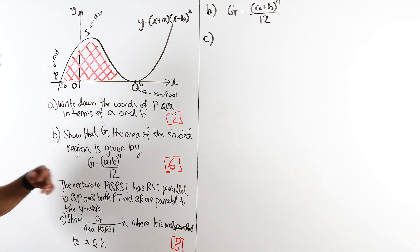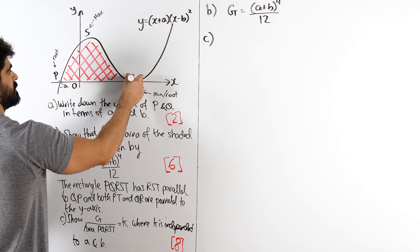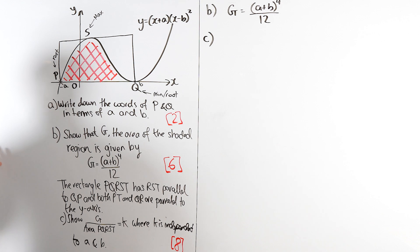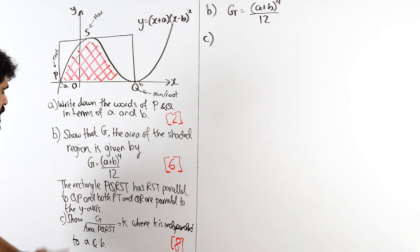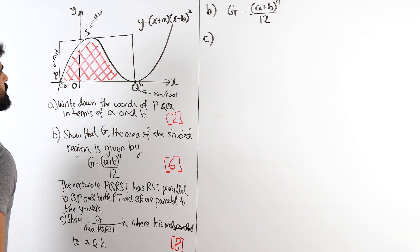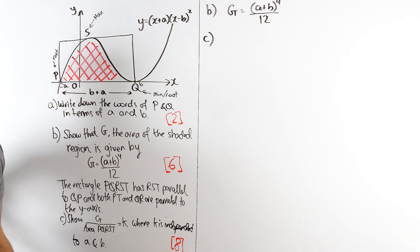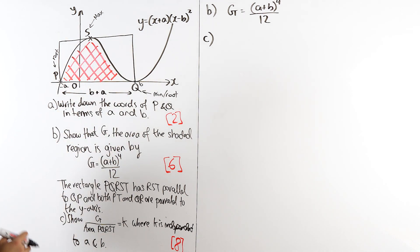So I'm going to write down that result. Then we shall move on to part c, which is eight marks, which I'm not looking forward to. So we have part b, G is a plus b to the four over 12. The rectangle PQRST has RST parallel to QP, and PT and QR parallel to the y-axis. So the rectangle is like that. Show that G, when you take this and divide it by the area of that rectangle, it's k, where k is independent of a and b. I actually don't know how people come up with these questions, it's crazy. So I know the base length is just b plus a. We need to work out the height.